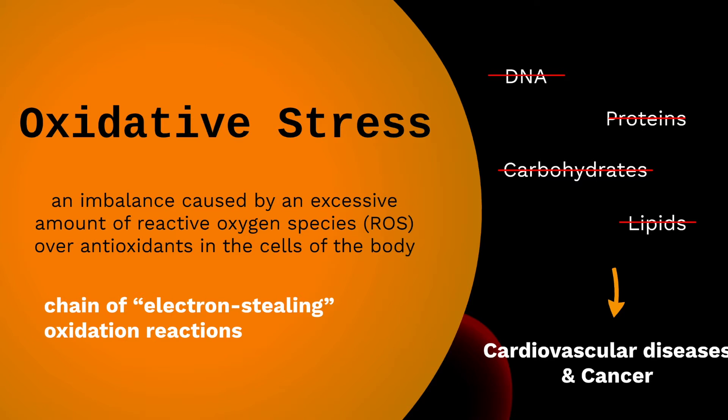When there is an excessive amount of ROS, the harmful chain of electron stealing oxidation reactions would damage molecules such as DNA, proteins, carbohydrates, and lipids in the nucleus and membranes of cells, leading to damages in the cells and contributing to all kinds of diseases, including cardiovascular diseases and cancer.